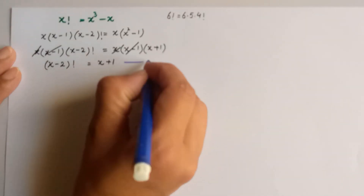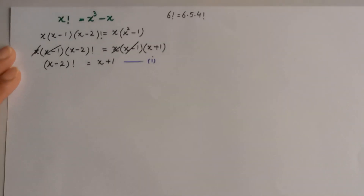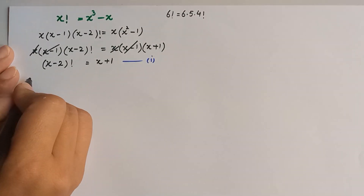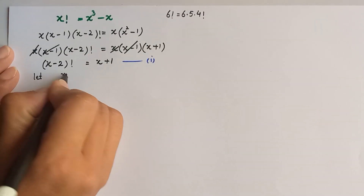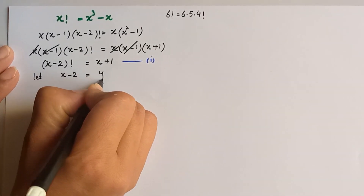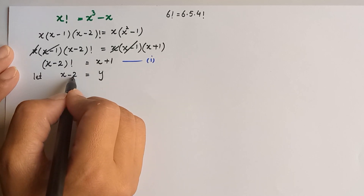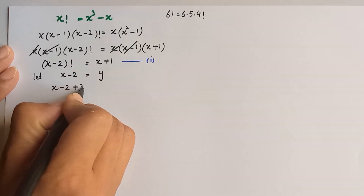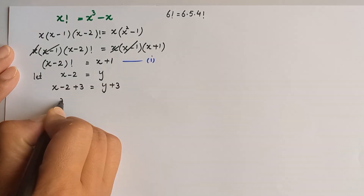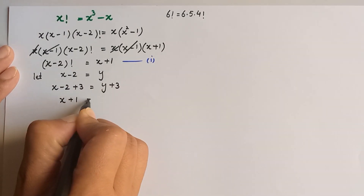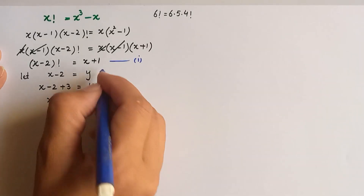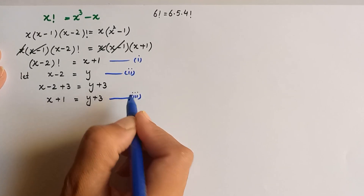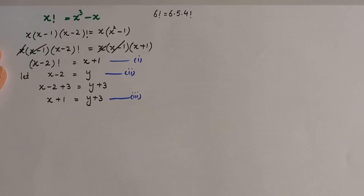Let's name this equation 1. In the next step we suppose x minus 2 equals y, so x plus 1 — by adding 3 to both sides — becomes y plus 3. We name these equation 2 and equation 3.